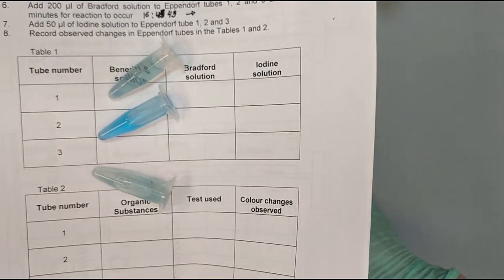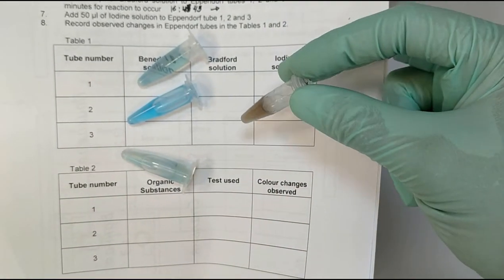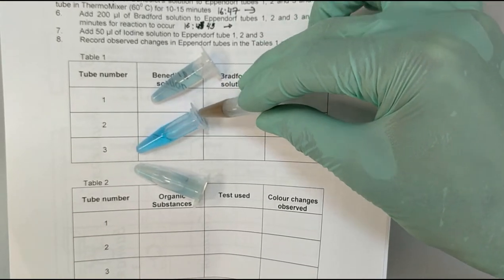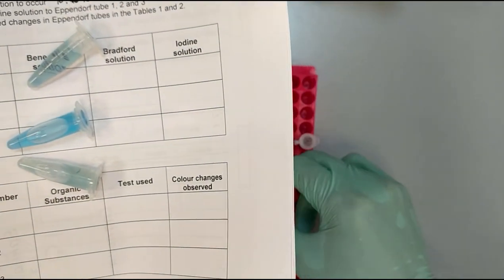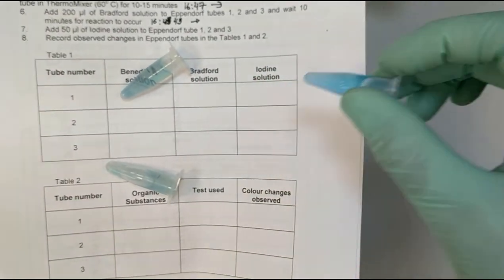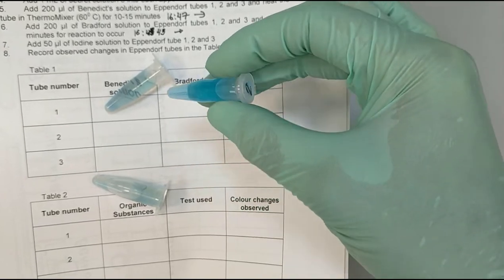So if we look at the color of the Bradford solution, we can see that the real difference is, for example, in the second tube. So the reaction with the Bradford solution happened in the second one.